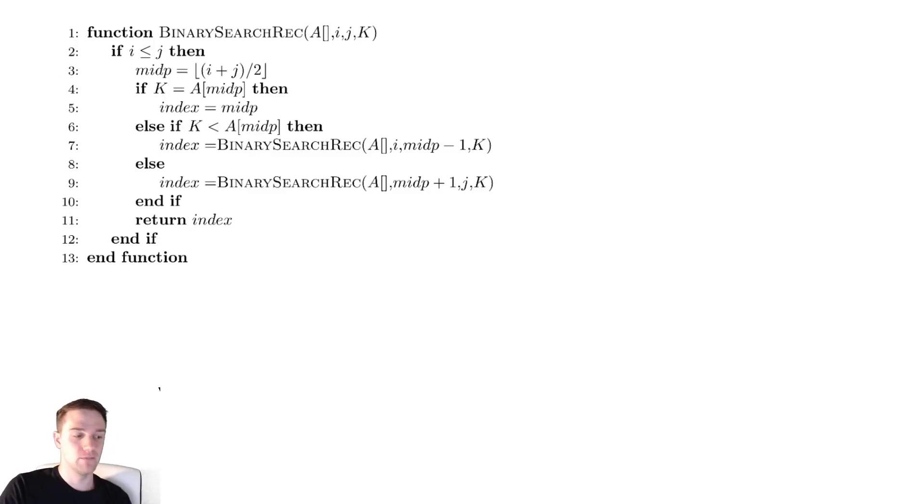This function will take as input a sorted array A, then two indices in that array, I and J, that correspond to the range of indices we will be searching, and then a value K, which we are looking for within the array.